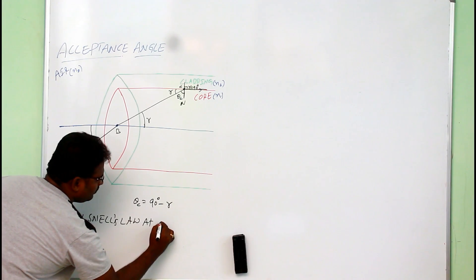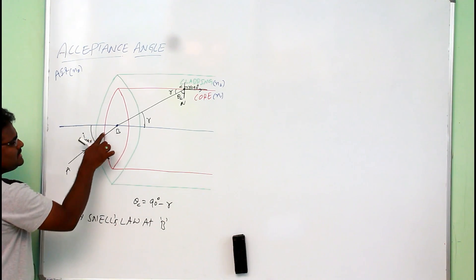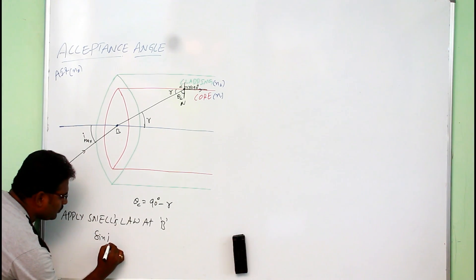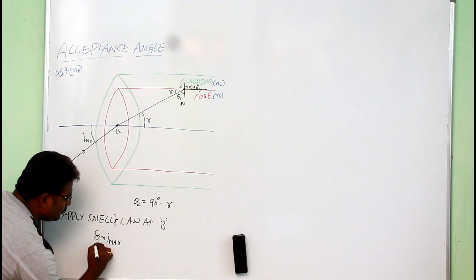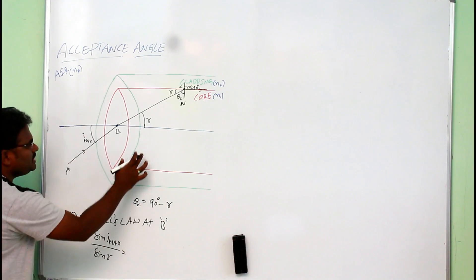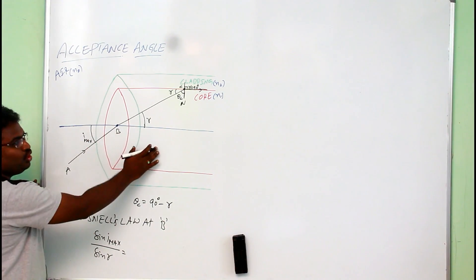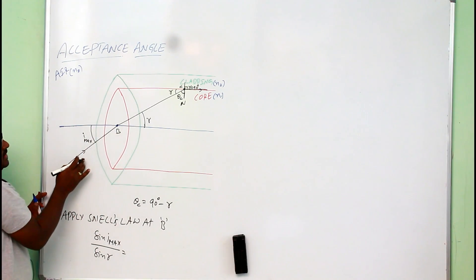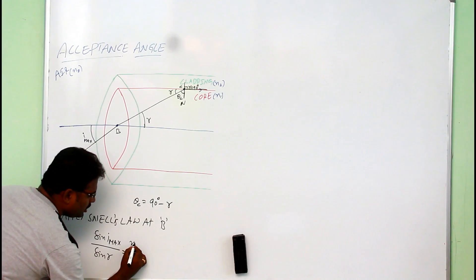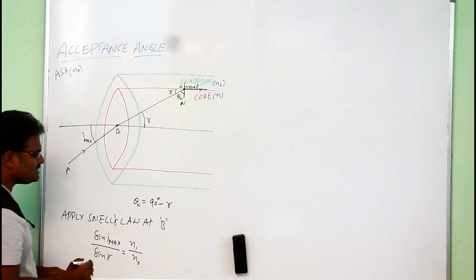Now apply Snell's law at point B. At point B: sine(i_maximum) by sine(R) equals N1 by N0, since point B is at the air-core interface, where the second medium is the core with refractive index N1 and the first medium is air with refractive index N0. Call this as equation 1.